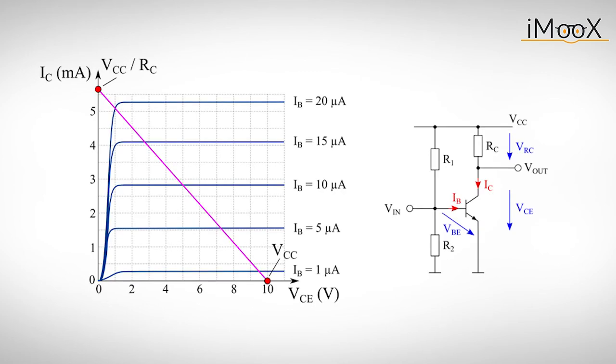To sum up, we can say that by adjusting the voltage divider at the input, we can adjust the quiescent current IC basically anywhere along this line and therefore define a quiescent point.